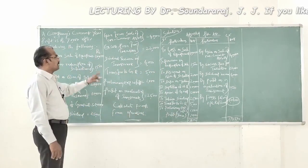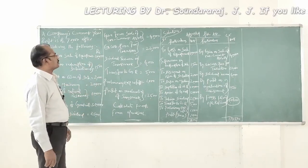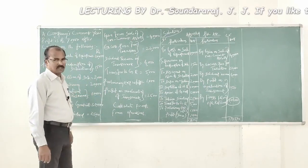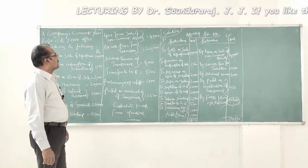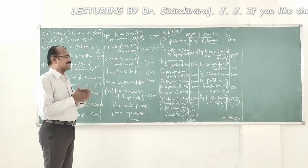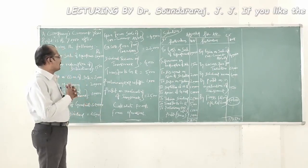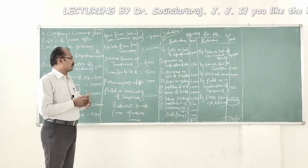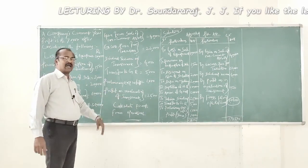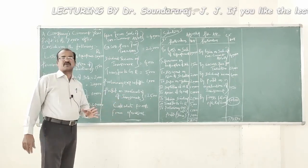Now let's move to the other items: gain from sale of non-current assets 40,000 rupees; excess provision for depreciation 22,000 rupees; dividend income on investment 4,000 rupees; transfer to general reserve 5,000 rupees; preliminary expenses written off 1,000 rupees; profit on revaluation of investment 2,500 rupees. We are asked to calculate the funds from operations from the given details.